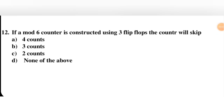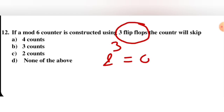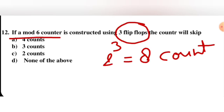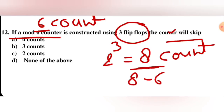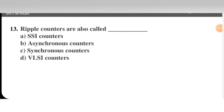Next question: if a mod 6 counter is constructed using 3 flip-flops, how many counts will it skip? First, with 3 flip-flops, maximum states countable are 2 raised to power 3 equals 8. A mod 6 counter counts only 6 states. So the counter will skip 8 minus 6 equals 2 counts. The answer is 2.